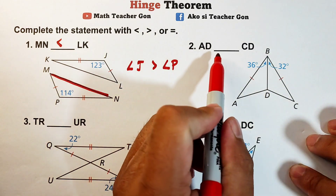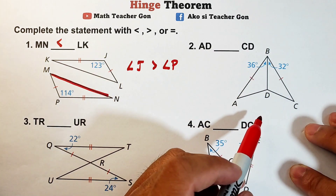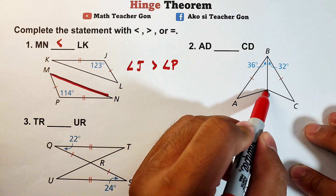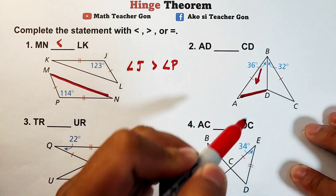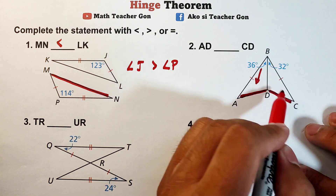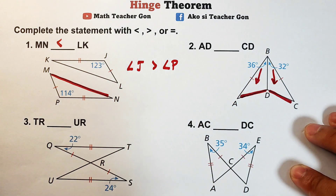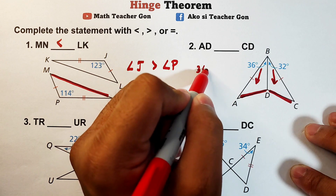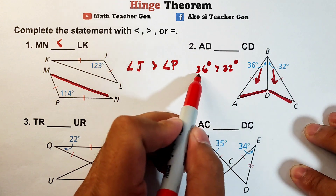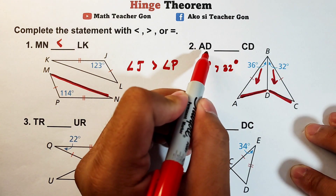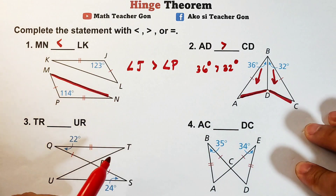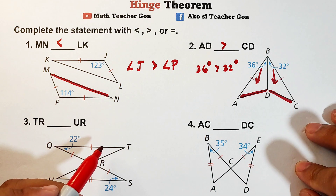For item number two, we have AD blank CD. Side AD is opposite to the 36-degree angle, and side DC is opposite to the 32-degree angle. Since 36 degrees is greater than 32 degrees, side AD is longer than DC. So we use the greater-than symbol: AD is greater than CD.